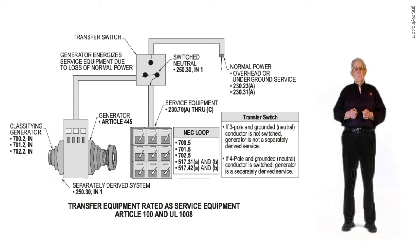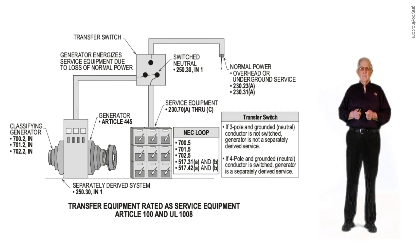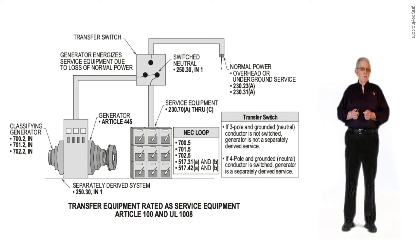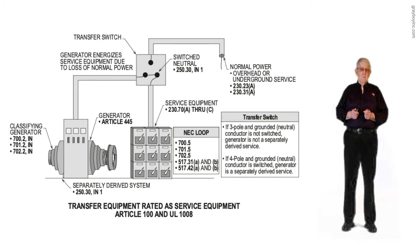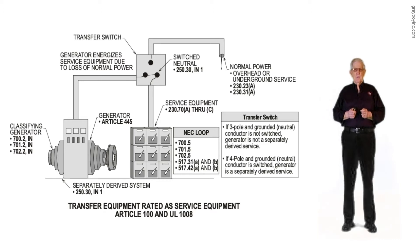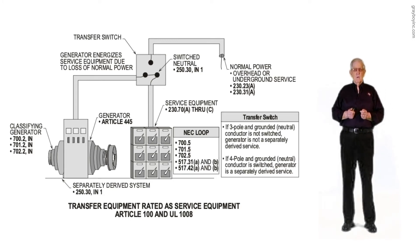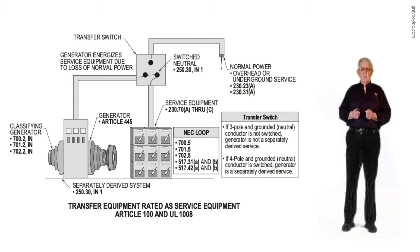There are some advantages based upon the classification of your generator. Notice 445.13 basically states if you size the conductors from a generator at 115 percent of the output of the generator, then the disconnecting means could be located remotely from the generator. But if you did not size the conductors at 115 percent of the output, then you would install a main at the generator.